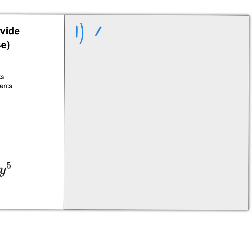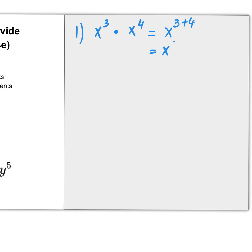Question one: x to the power of three multiplied by x to the power of four. It says add the exponents, so x to the power of three plus four — x to the power of seven.